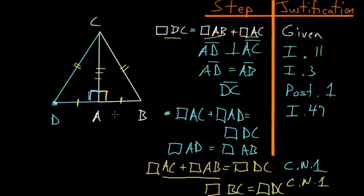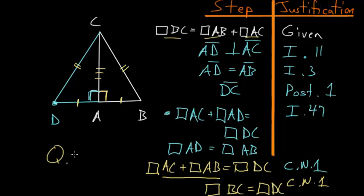Remember, the entire goal of this proposition was to start with the fact that the square on each of the sides next to the right angle equals the square on the side opposite the right angle — the hypotenuse — then prove that this angle is a right angle. Since we've done that, we can end with Q.E.D.